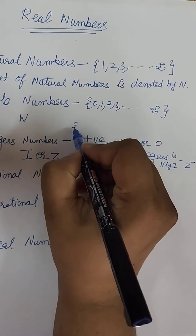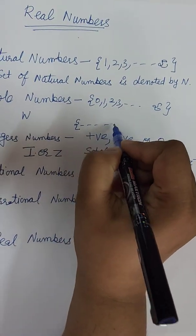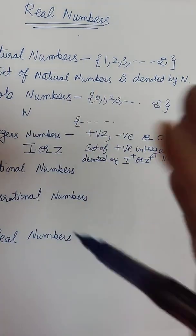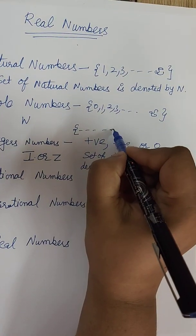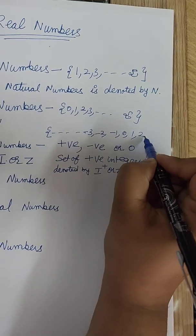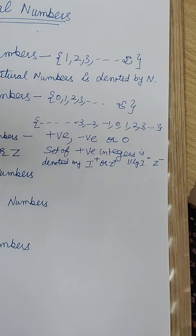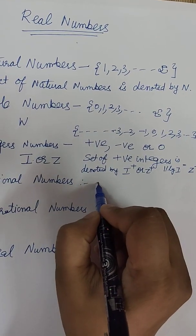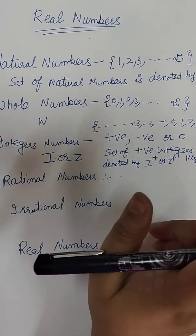So now how to write integers? Like here they start from the dashes because here it is minus infinity and the other side it is plus infinity. So minus 3, minus 2, minus 1, 0, 1, 2, 3 and so on.